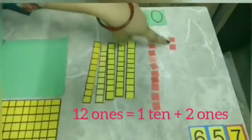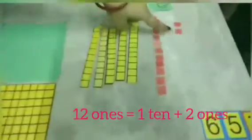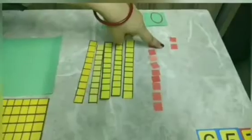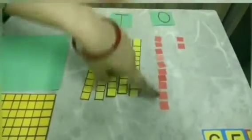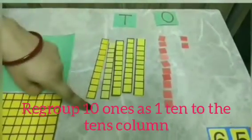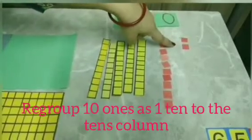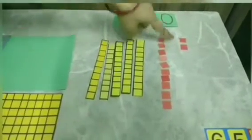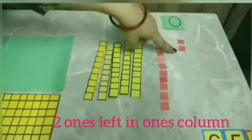So we have 7 ones. Now 12 ones is made of 1 tens and 2 ones. So if we count this 1 tens into this tens column, how many are left in the ones column? 2 ones. We are left with 2 ones.